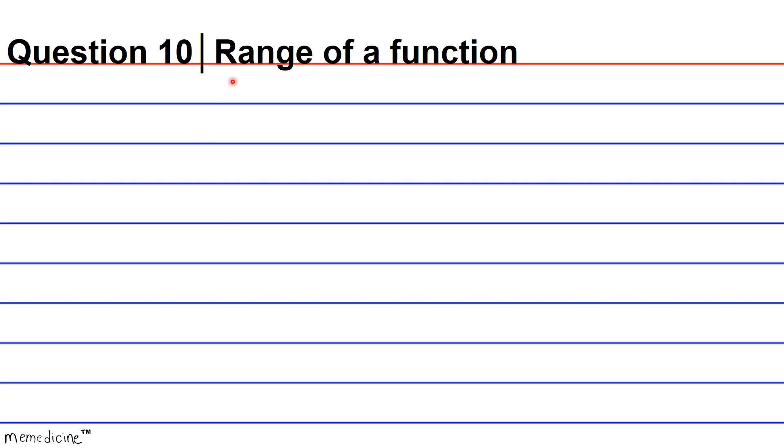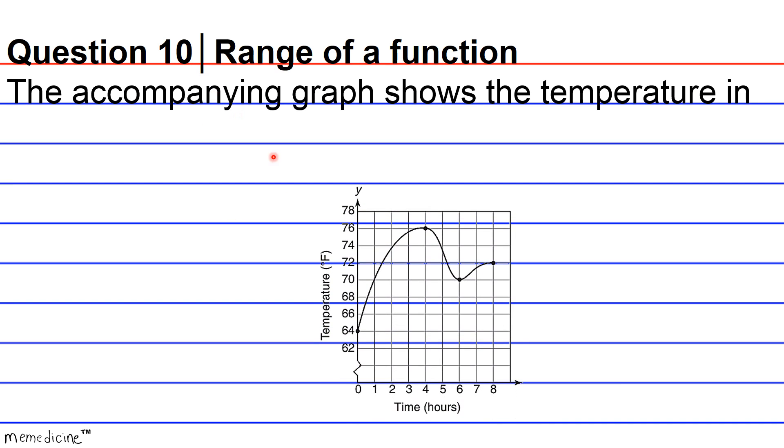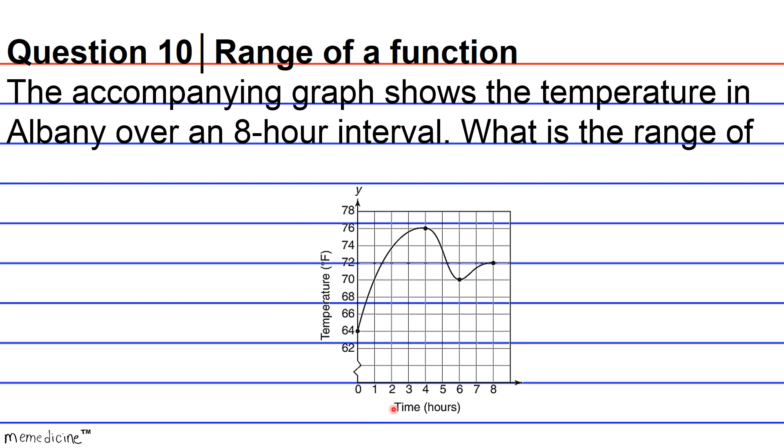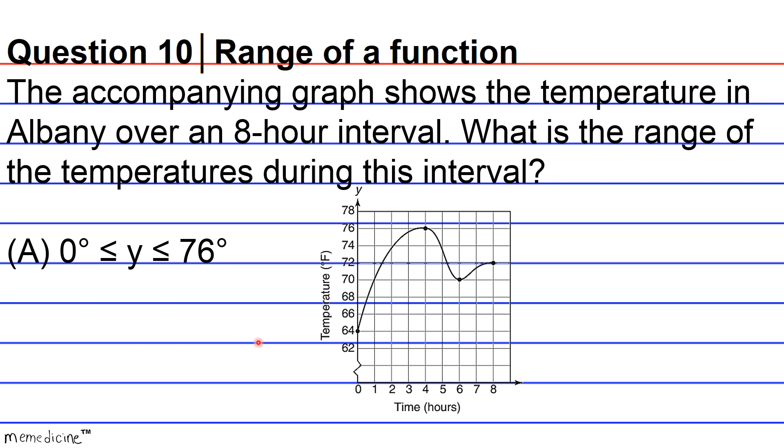Question 10, range of a function. The accompanying graph shows the temperature in Albany over an 8 hour interval. What is the range of temperatures during this particular time interval? Is it going to be interval A? 0 degrees is less than Y, is less than or equivalent to Y, is less than or equivalent to 76 degrees. Is it going to be interval B? 64 degrees is less than or equivalent to Y, is less than or equivalent to 72 degrees.